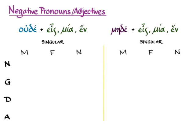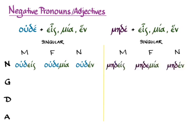So let's learn how to form these compound negative adjectives that can also be used as pronouns. The epsilon of ouda disappears before the epsilon at the beginning of heis and hen, and so we get these forms. The same thing happens with mayda in the may form: maydaeis, maydamia, mayden.